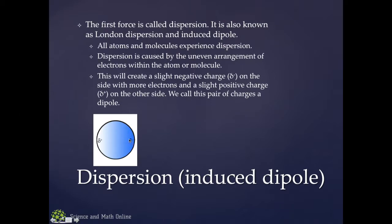When that happens, whichever side has more electrons is going to have a slight negative charge. We denote this with a lowercase delta — a D with a tail on top — meaning small change. We've already seen capital delta meaning big change, like change in temperature or change in enthalpy; this lowercase delta means small change. So we have delta minus and delta plus. The side that has more electrons gets the slight negative charge, and that means the other side has a slight positive, and that's what we call a dipole — it has two poles, a positive pole and a negative pole.